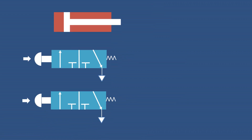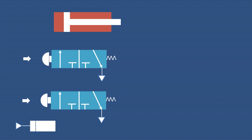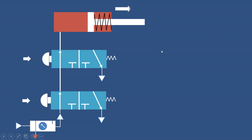Now we operate both push buttons simultaneously. With both push buttons operated, we get the connection of the air line and the piston moves in the forward direction. Compressed air from the air compressor enters the FRL unit, and with the left envelope mode now active, this line gets connected. The push button is pressed on this valve as well, so we get the left envelope mode and the air enters on the cylinder side of the piston, causing the forward motion. This is known as direct control of the single acting cylinder.